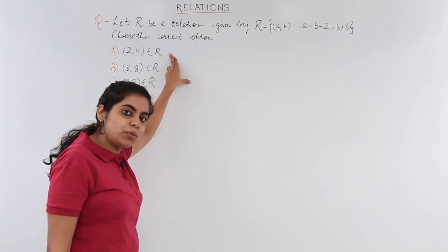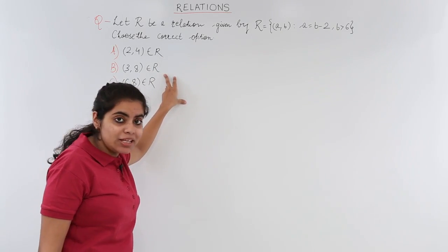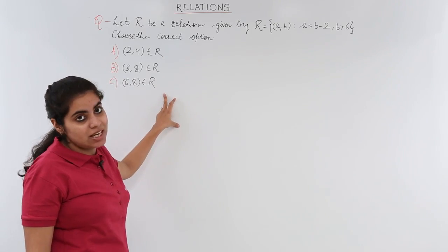These three options given are: (2, 4) belongs to R, (3, 8) belongs to R, and (6, 8) belongs to R.